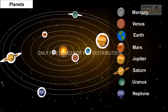All the eight planets of the solar system move around the Sun in fixed paths called orbits.